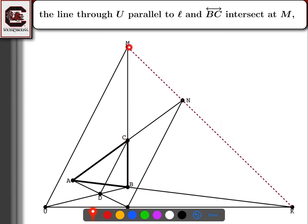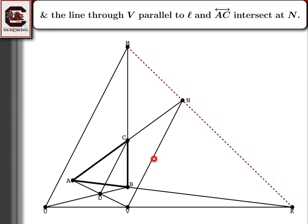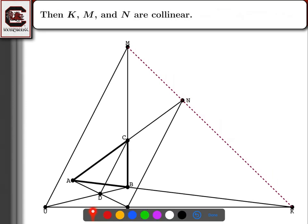The line through U that is parallel to L — the line CD — intersects BC at M. And similarly, the line through V parallel to L intersects AC at N. So that gives me all the points. What I'm trying to show is that K, M, and N, in any order, are collinear.